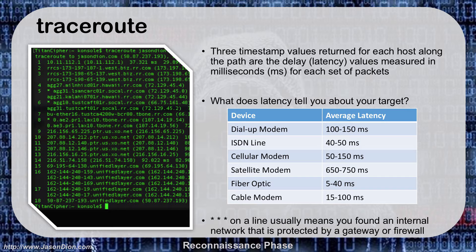Latency can tell you what kind of connection a target has. A dial-up modem gives longer latency — 100 to 150 milliseconds. Cellular is around 50 to 150 milliseconds. Satellite gives very high latency — around 600 to 700 milliseconds. Fiber optic will be very low latency — 5 to 40 milliseconds. As you're doing your traceroute, this starts giving you more information about the victim you're going after.